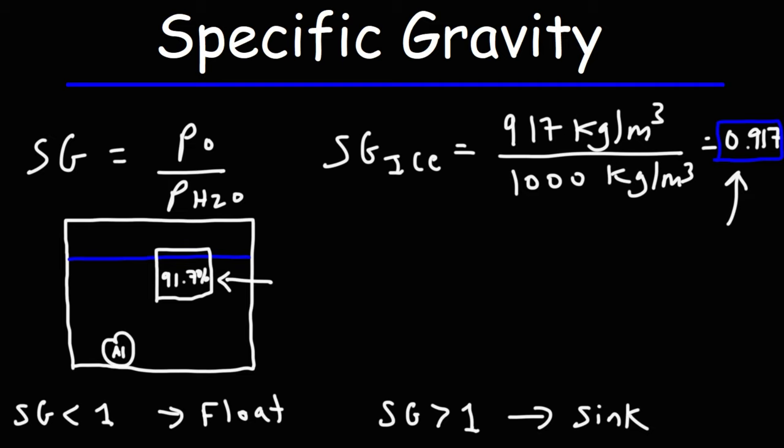So that's basically it for this video. Now you understand the concept of specific gravity. Remember, it's a ratio - this ratio doesn't have any units. It's a unitless ratio that describes the density of an object relative to the density of water.